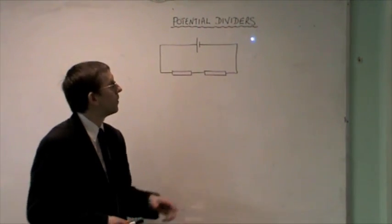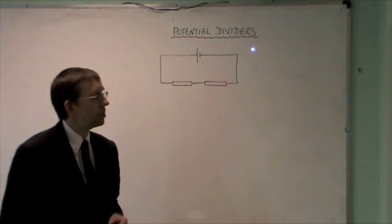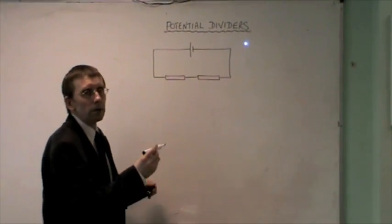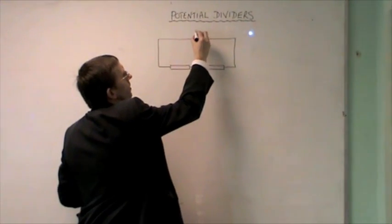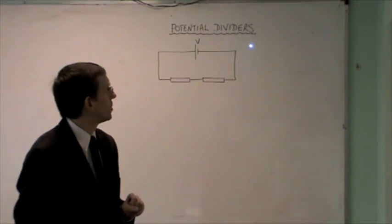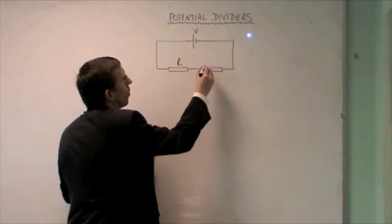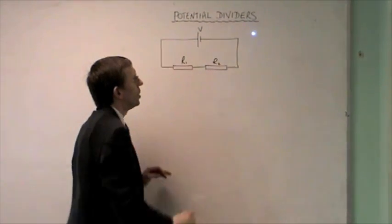What is a potential divider? This circuit here shows a basic potential divider. I've got a source of potential difference here, a battery that's producing a potential difference V. I've got two resistors, R1 and R2.